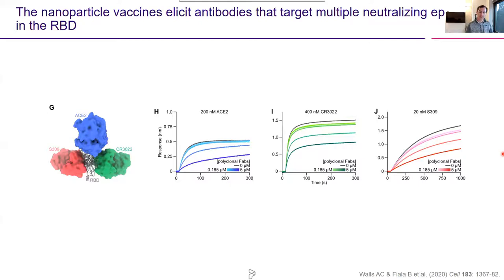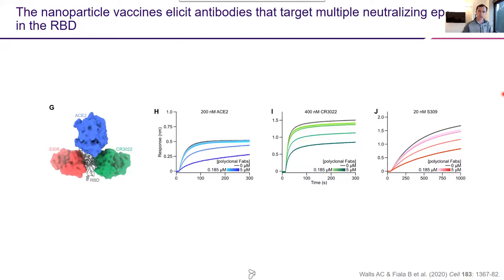One potential concern about an RBD-based vaccine is whether you're hitting just one neutralizing epitope or multiple. The latter would obviously be preferable to minimize the occurrence of viral escape mutations. Lexi developed a competition BLI assay and showed that in NHP sera that had received the RBD nanoparticle vaccine, we see potent competition against multiple distinct neutralizing epitopes — the receptor binding motif that binds ACE2, as well as epitopes targeted by two monoclonal antibodies. So the RBD-based vaccine is eliciting neutralizing antibodies against multiple non-overlapping epitopes.